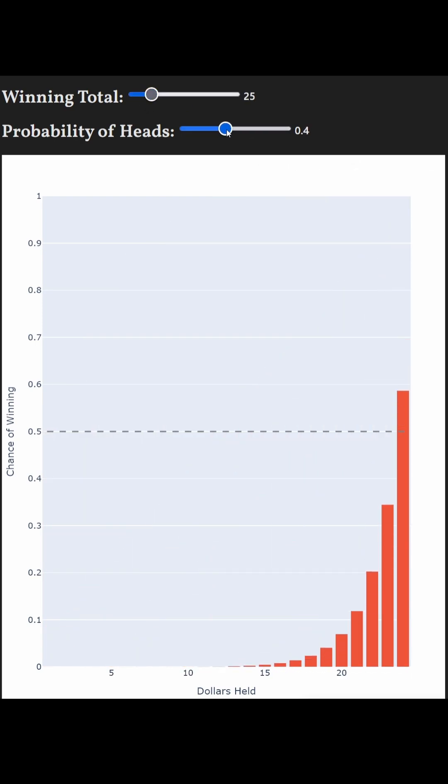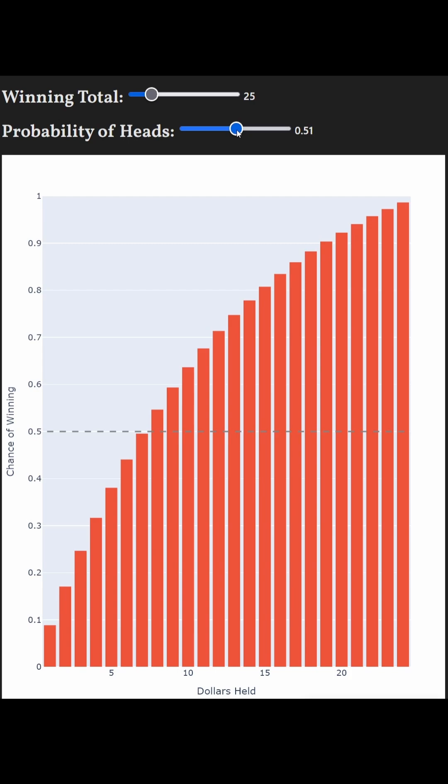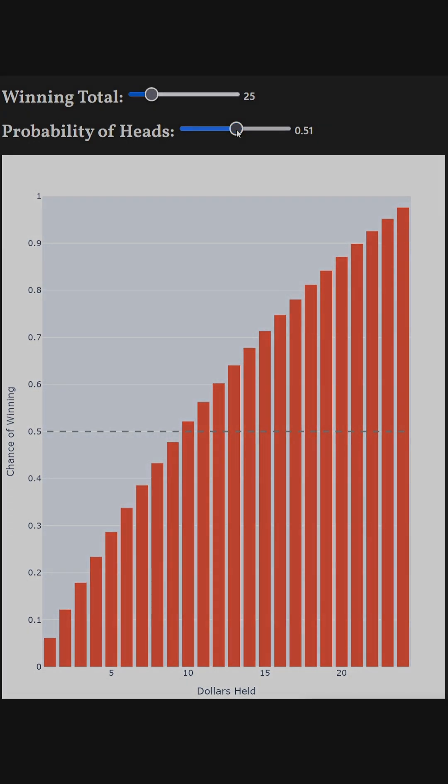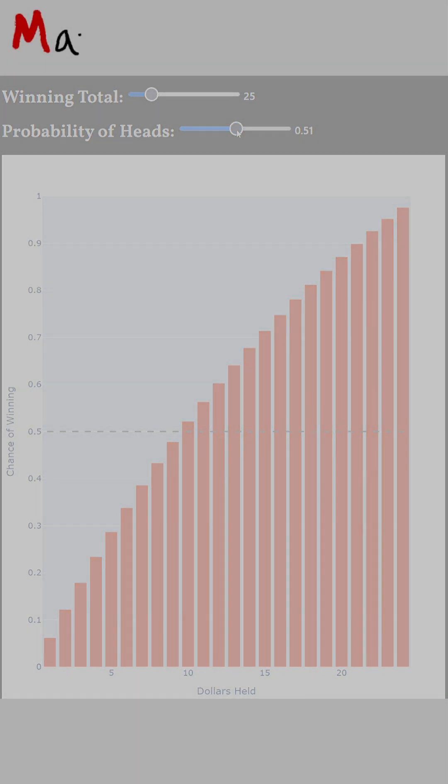The point is we can predict the outcome for any combination of these variables by studying the game as a Markov process. We could even make the game more complicated by allowing a choice of bet size on each flip that differs from one dollar. That would make the problem a Markov decision process or MDP, but we'll stick with the original game, which is a Markov reward process, and focus on the Markov part for now.